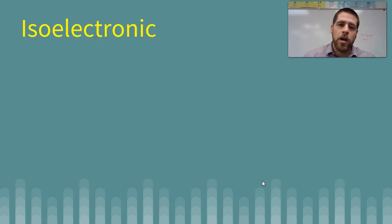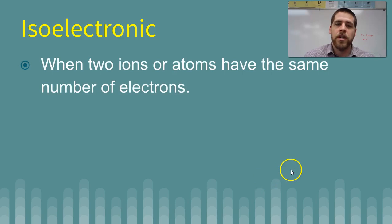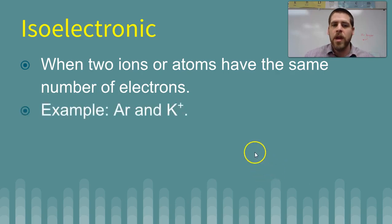Now, one more thing that we need to talk about is the term isoelectronic. So make sure you have a definition of this. It's when two ions or atoms have the same number of electrons. Iso means the same, and electronic meaning referring to electrons, so isoelectronic. Let's look at the example of argon and the potassium ion.